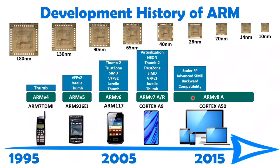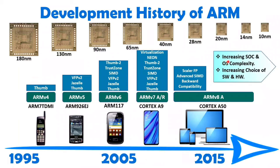Observing the upgradation from ARM7 through ARM9 to the Cortex series, there is an increase in system-on-chip complexity as well as operating system complexity. Various companies use the ARM core to design their applications — not only for mobiles, laptops, and desktops, but also many computers, tablets, and other devices. Users have better choices of software and hardware and can experience many more features.